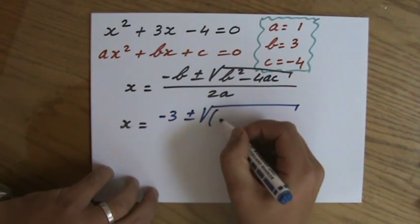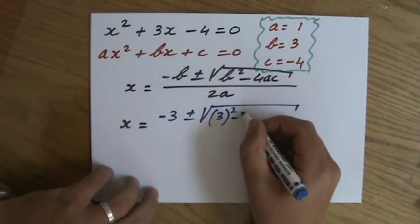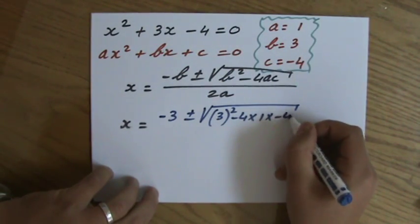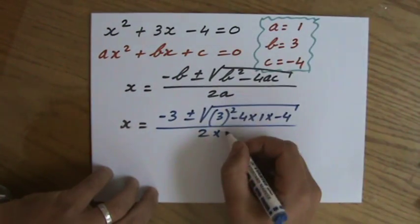b squared. Always put some brackets around that, especially when it's negative. 3 squared minus 4 times a times c, and all of that divided by 2 times a. There we go.